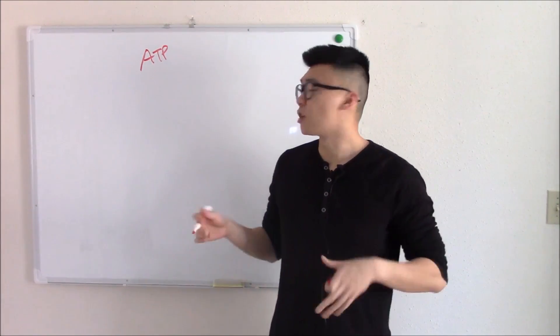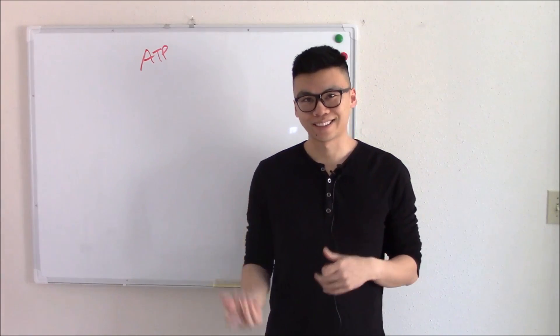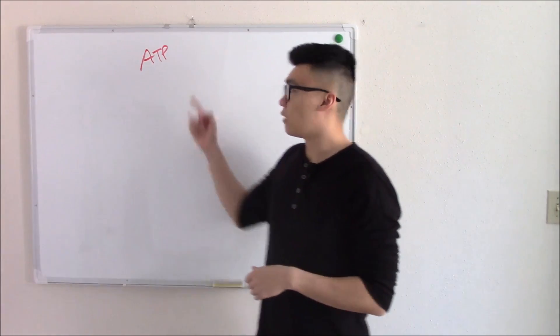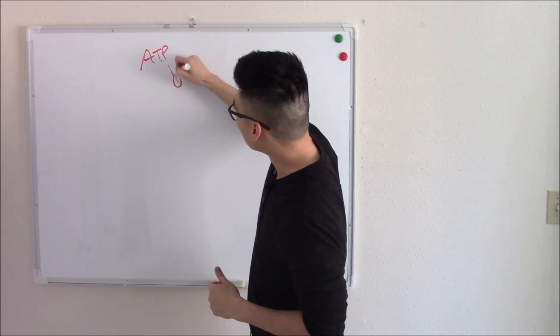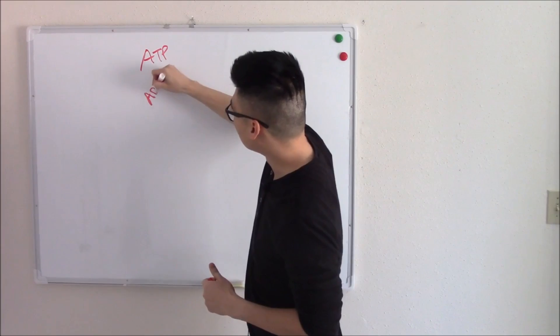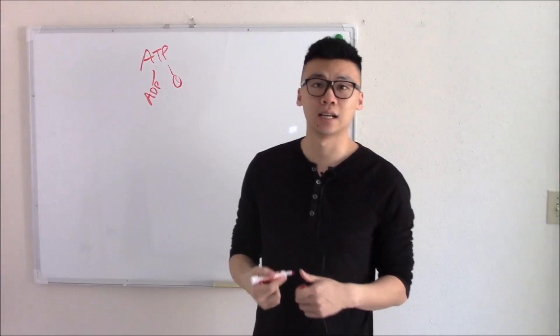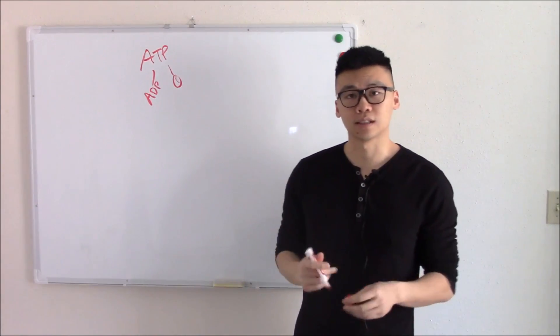Rule number two, know at least superficially what enzymes do what. So if we break ATP down, if we move a phosphate group off, we get a phosphate group and ADP, or adenosine diphosphate, makes perfect sense.